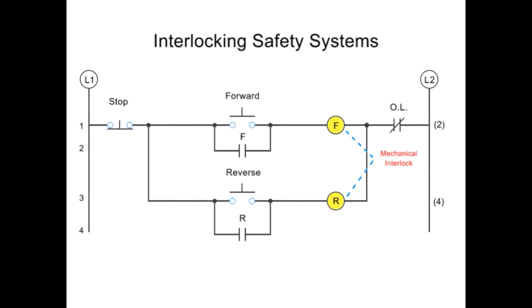The most basic level of interlocking systems is a mechanical interlock. A mechanical interlock is a physical lock that prevents the forward and reverse contactors from being engaged at the same time.